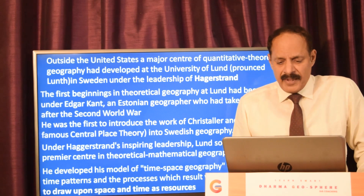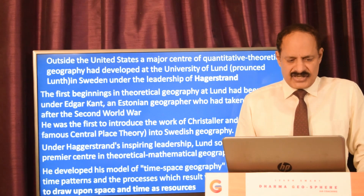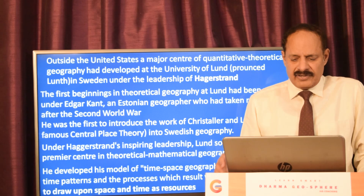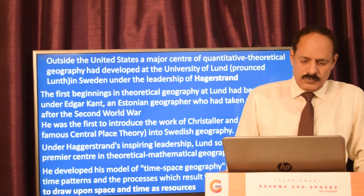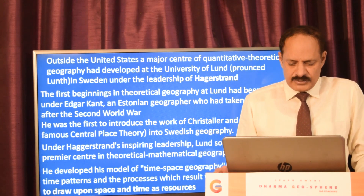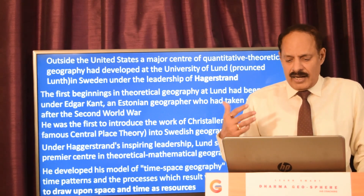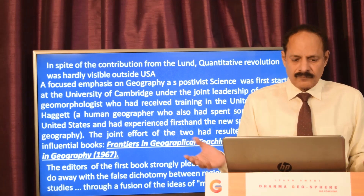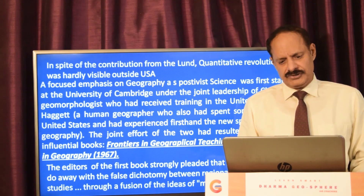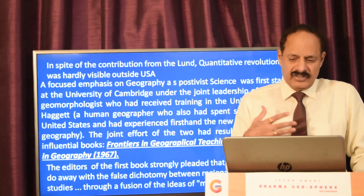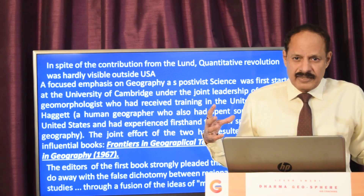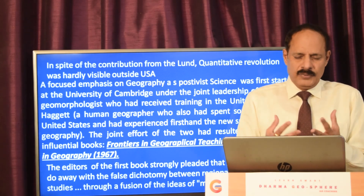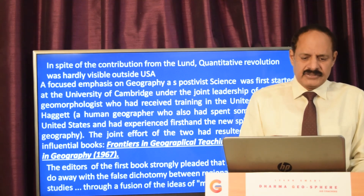Social physics was based on the premise that the dimensions of society are analogous to the physical dimensions. Outside the USA, it was the University of Lund in Sweden which developed as a center under the leadership of Hagerstrand. It was here where the central place theory of Christaller and Lösch was brought into Swedish geography, and under the inspiring leadership of Hagerstrand, Lund soon became a premier center for the theoretical and mathematical conduct of geography.